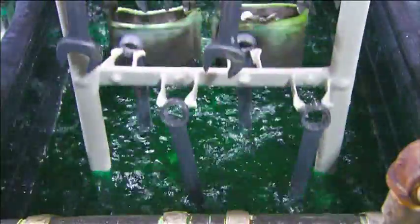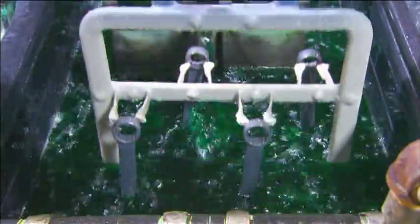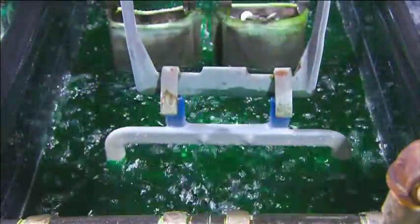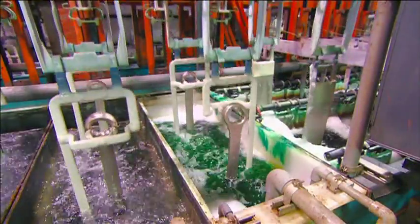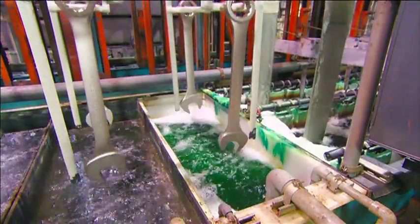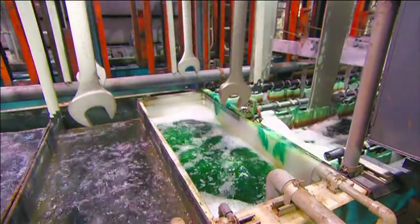A machine then dips the wrenches into a nickel plating solution that helps make them corrosion-resistant. This series of baths then plates the wrenches with trivalent chrome, which is a safer, more environmentally friendly alternative to traditional plating methods.